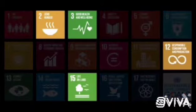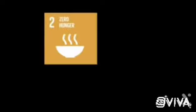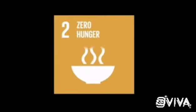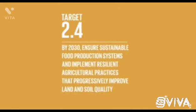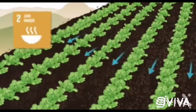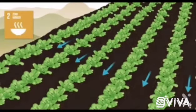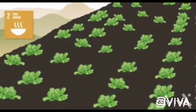Of the 17 goals, four contain targets specifically related to soils. The goals of SDG 2 are to end hunger, achieve food security, improve nutrition, and promote sustainable agriculture. One of its targets demands that food be produced sustainably, using agricultural practices that improve land and soil quality.